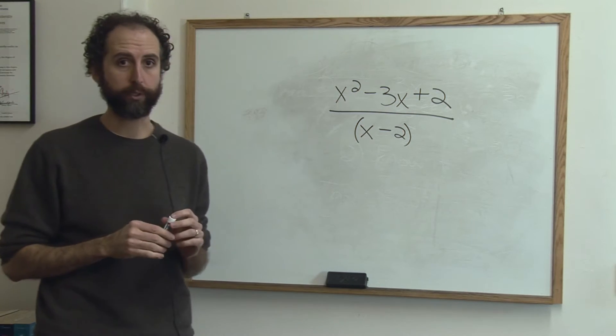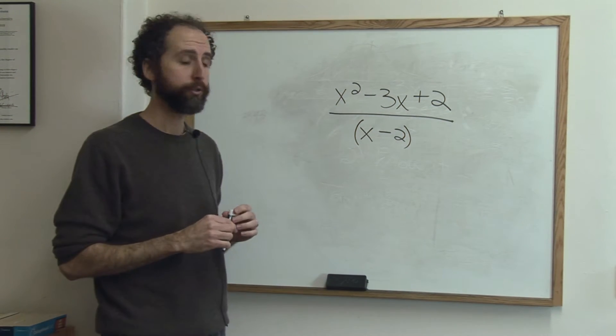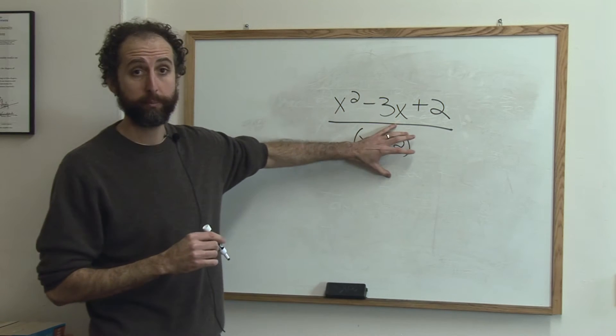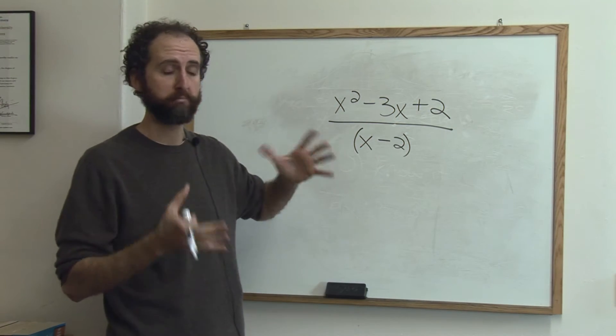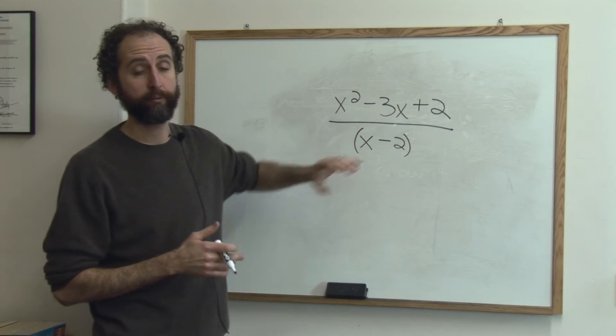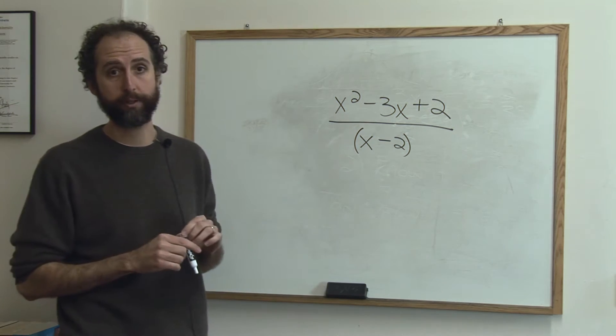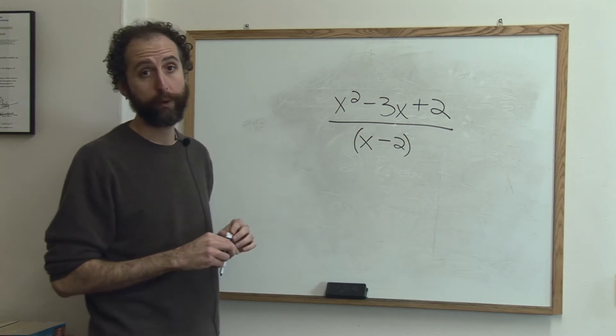Let's take a look at simplifying a rational expression. A rational expression just means that we have variables on the bottom of a fraction. It's a technical math term for variables on the bottom of a fraction, as well as on the top or not—it doesn't matter, but being on the bottom makes it a rational expression.